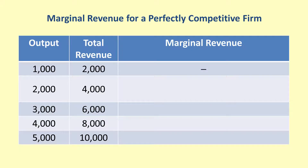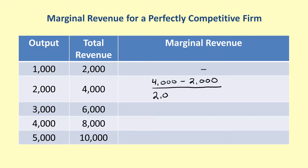Suppose the given table provides output and revenue information for a perfectly competitive firm selling a product at a price of $2 per unit. For the second row of the table, we calculate marginal revenue as the change in total revenue, or 4,000 minus 2,000, divided by the change in quantity, or 2,000 minus 1,000, which gives MR equals 2. Similar calculations show that marginal revenue is equal to 2 for the remaining rows.